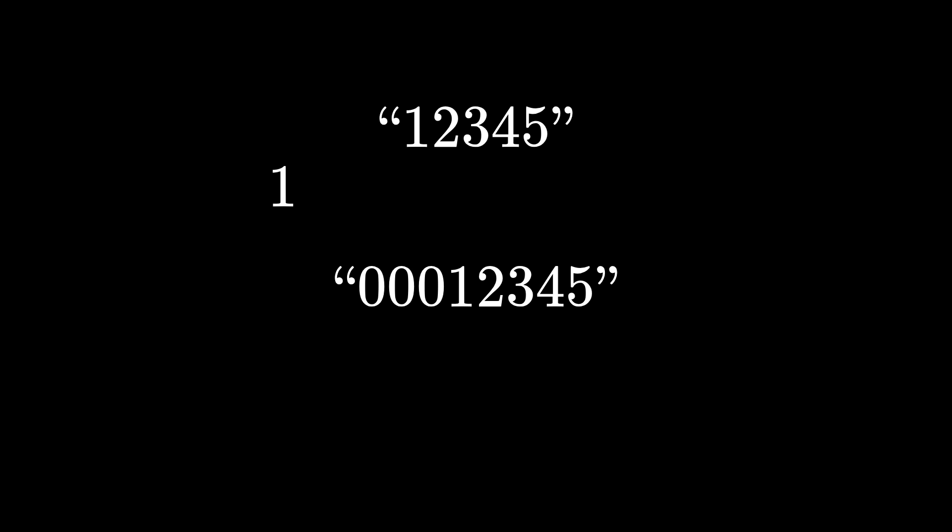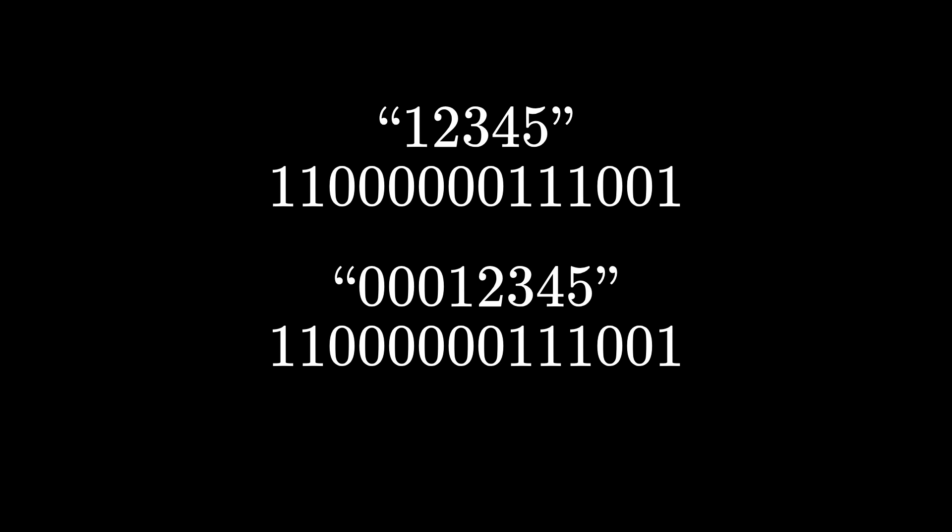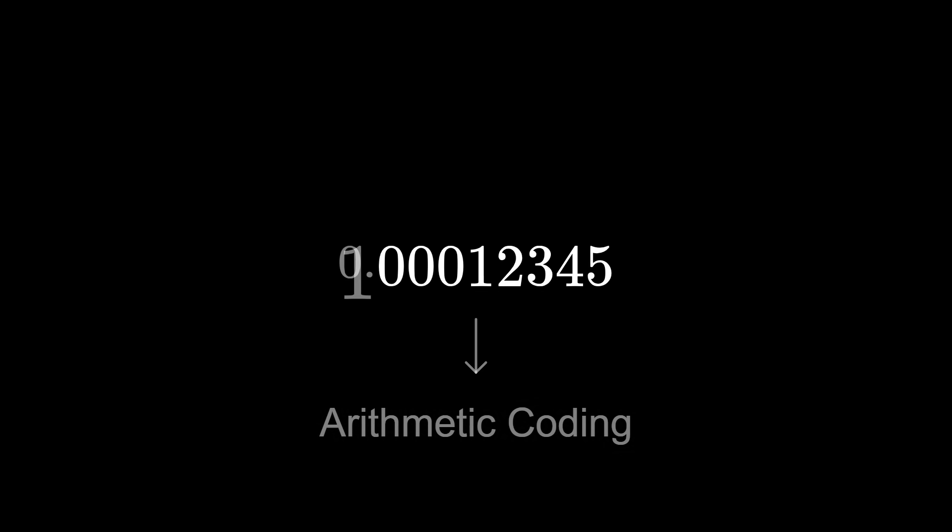But there is a bug. If the message starts with a zero, then converting it to base 2 will mess it up. So we have to add something to the start of every message. You can either add a decimal point and treat this as a number between 0 and 1, which will lead you to arithmetic coding, or you can add another non-zero symbol and treat it as a natural number, which will bring you to asymmetric numeral systems. I'll describe arithmetic coding first.